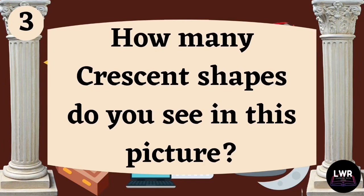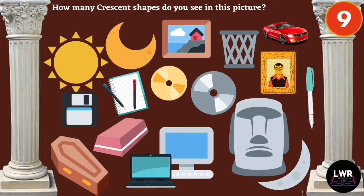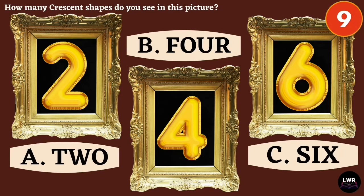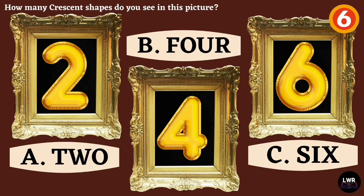Question number three. How many crescent shapes do you see in this picture? Letter A, two. Letter B, four. Or letter C, six.